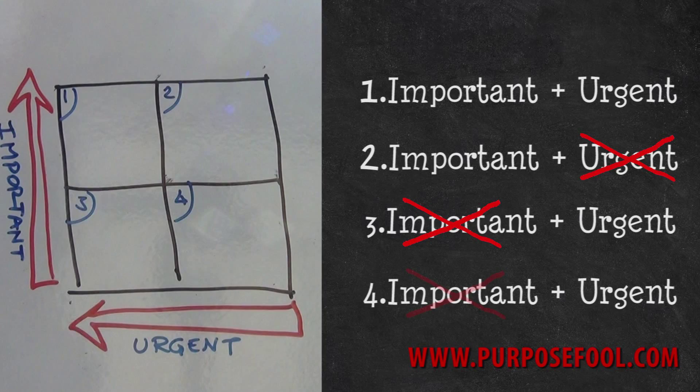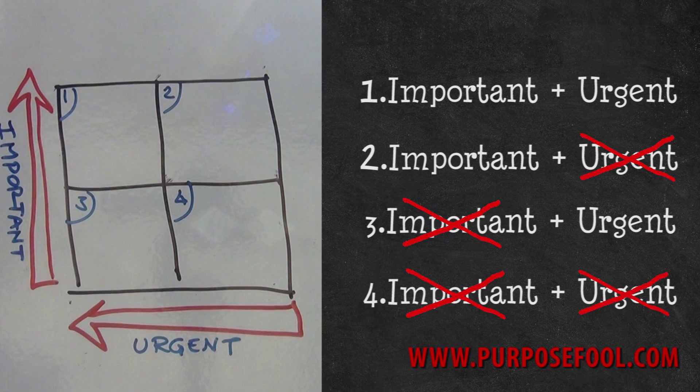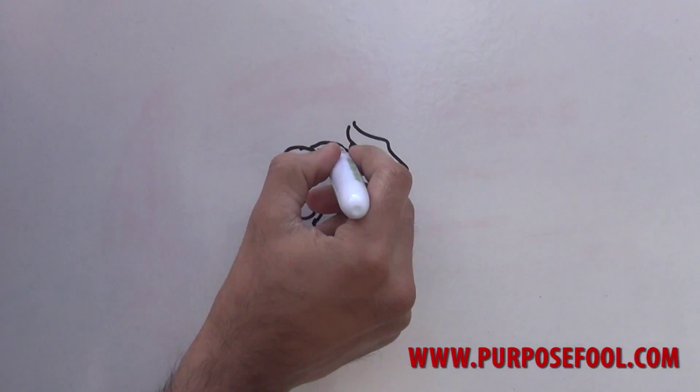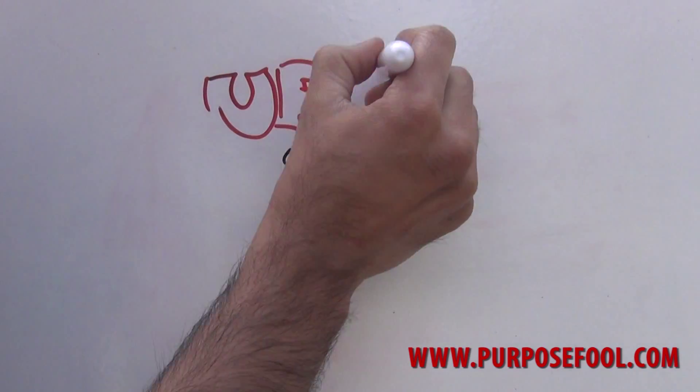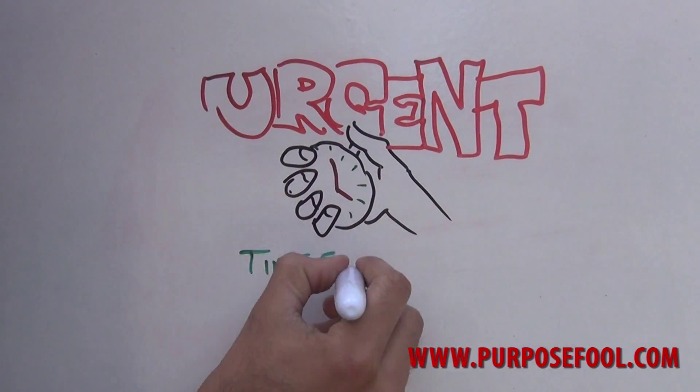And finally in quadrant four, things which are neither important nor urgent. Things that we should only really consider doing if we've managed to complete everything in quadrants one to three. How do we decide if something is urgent or not? We can define something as urgent if it's time sensitive, if it won't wait.